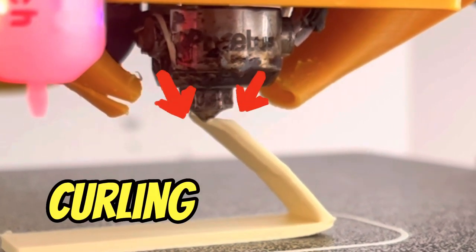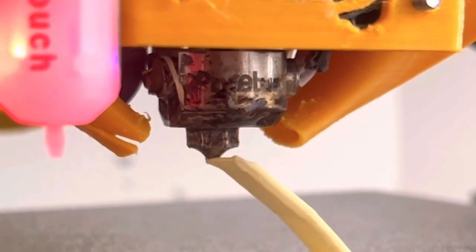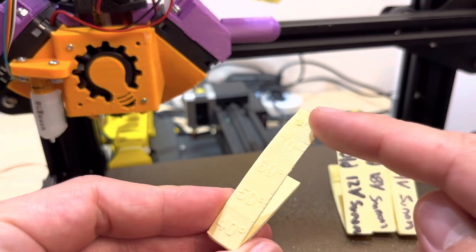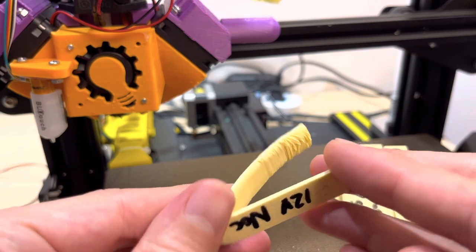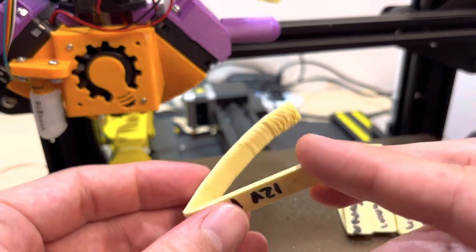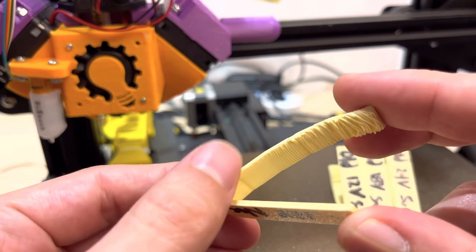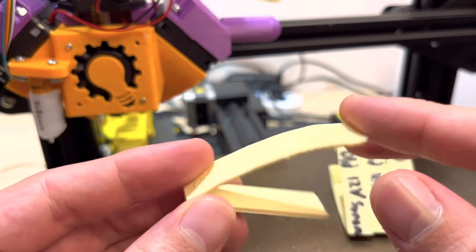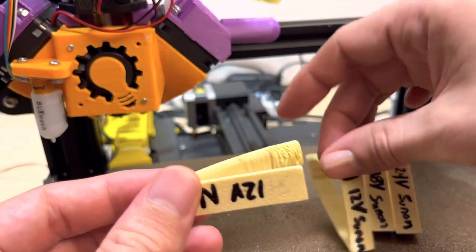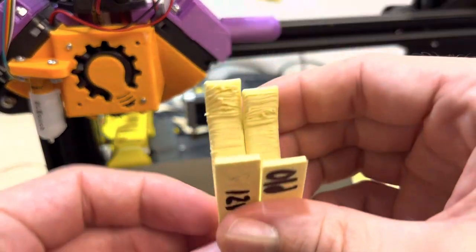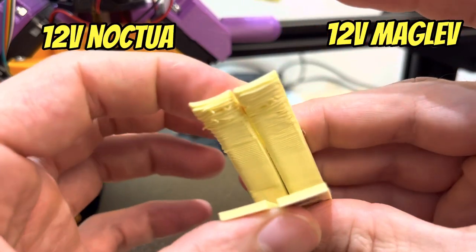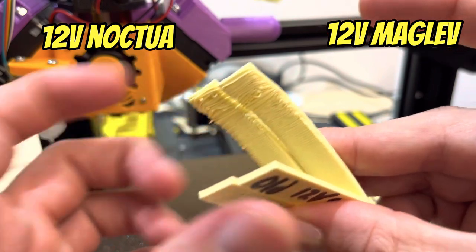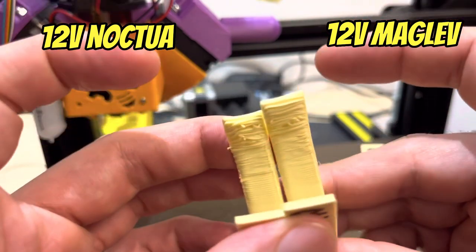Now let's compare the maglev fan performance in the overhang test. This is a standard overhang from 40, 50, 60, 70, and 80 degrees. This is done with the original 12-volt Noctua fan. You can see the performance: 40 and 50 degrees no problem, 60 is a little shaky, and 70, 80 gets ugly. Let's compare that against the 12-volt maglev fan. These are almost identical in tests. Again, 60 looks okay and 70, 80 gets to be pretty bad.